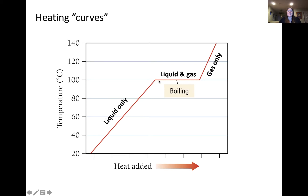Along this entire temperature plateau, both liquid and gas are present and at equilibrium. After the intermolecular forces have been disrupted, any additional heat added goes into raising the temperature of the gas molecules. This heating curve displays the importance of intermolecular force disruption for the process of boiling.